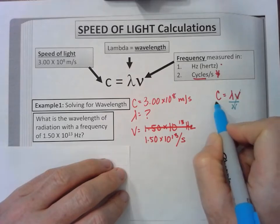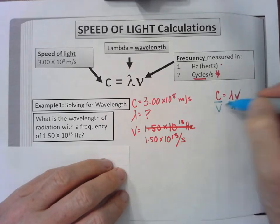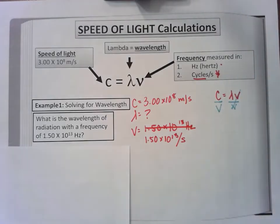I'm going to reverse it so the thing I'm solving for is on the left: wavelength equals speed of light divided by frequency.